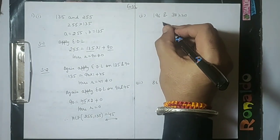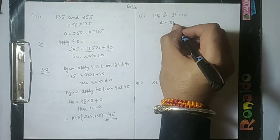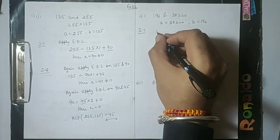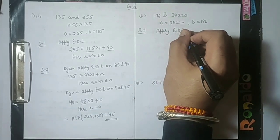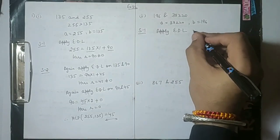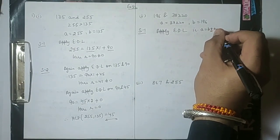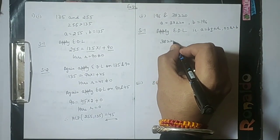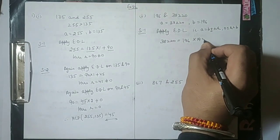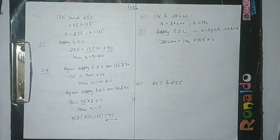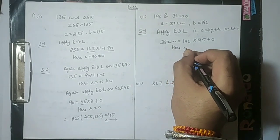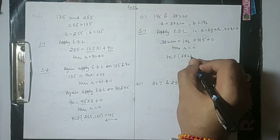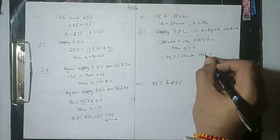Next question: HCF of 38220 and 196. The greater number is 38220, so we take A as 38220 and B as 196. Applying Euclid's division lemma: when we divide 38220 by 196, the quotient is 195 and the remainder is 0. In the first step we found r equal to 0, so the smaller of these two numbers is the HCF. Therefore HCF of 38220 and 196 is 196.